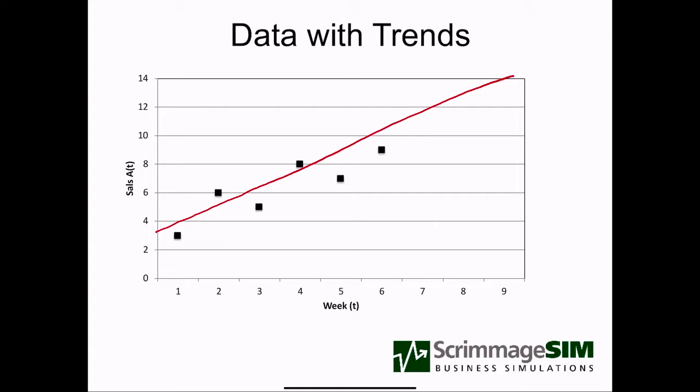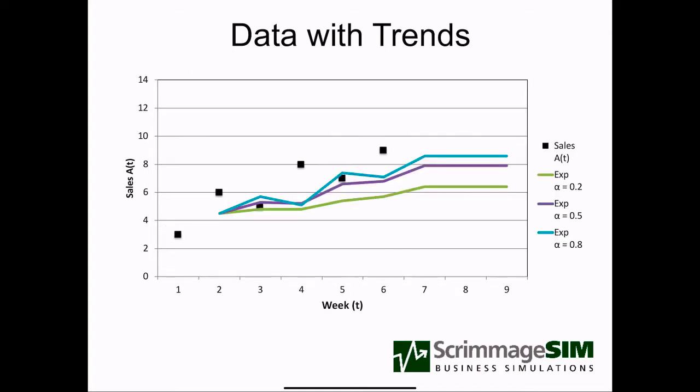Smoothing models don't do well with this kind of data. For example, here's three different versions of the exponential smoothing model with different values for alpha, with different responsiveness. We can see that the smoothing model always under forecasts. It does not predict that trend in the future. It reacts to that, adjusts its values upward, but always lagging. What we want is a straight line linear trend model, a way to draw a straight line that fits the data and will give us a much better forecast into the future.